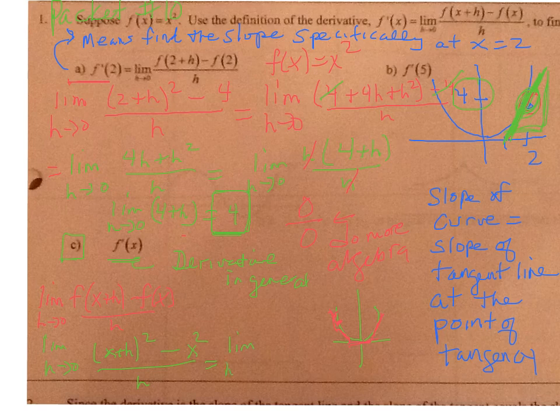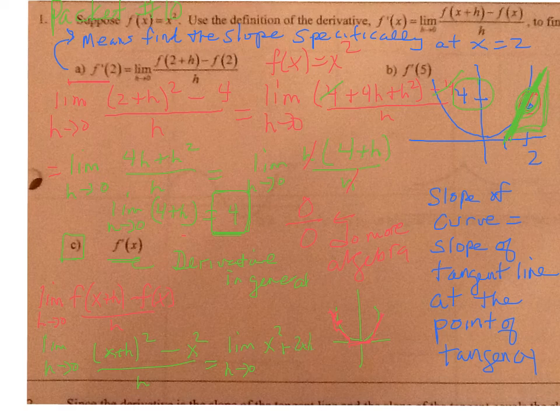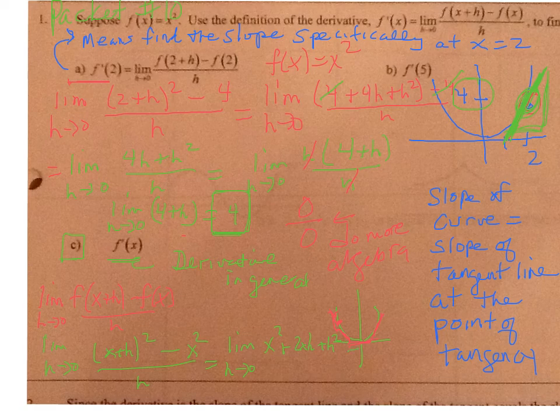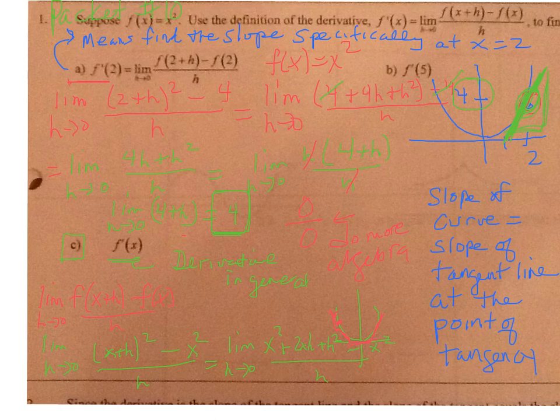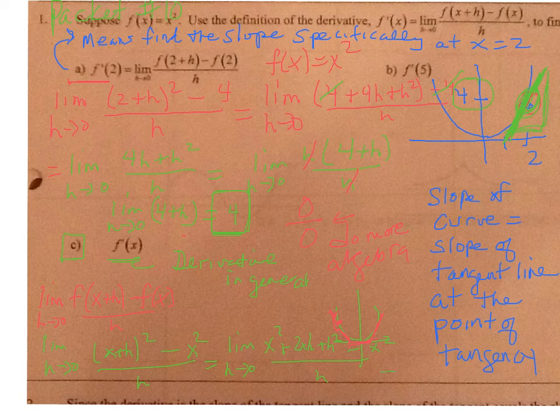Expanding that out, I have x squared plus 2xh plus h squared minus an x squared all over h. Since I'm running out of room I'm going to let you finish that algebra out. I will tell you that your final answer is 2x.